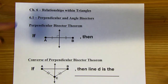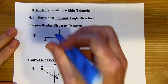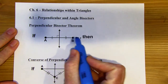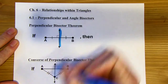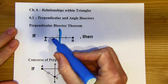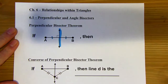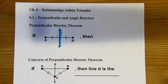We start off with the Perpendicular Bisector Theorem, and you have to understand what a perpendicular bisector is. We've already defined that earlier in the year. If you look at segment AB here, the blue line is the perpendicular bisector because it cuts it into two congruent segments and it's perpendicular.